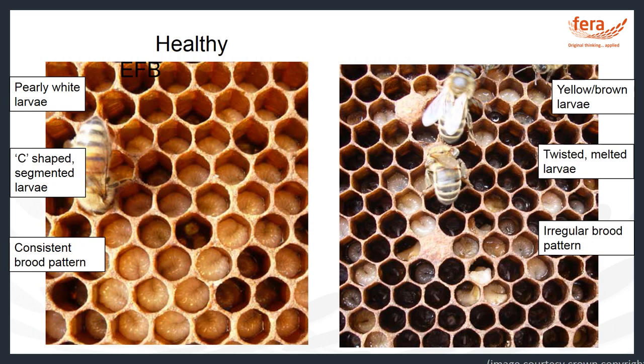If we compare diseased larvae to healthy larvae, the symptoms appear obvious. On the left hand side we have an example of healthy brood — the larvae are sitting neatly in their cells in a C shape, with a clear segmentation pattern, pearly white, and the overall brood pattern is consistent. However, when the comb is infected with EFB, like the example image on the right, the brood pattern is inconsistent. Some of the larvae are not in a C shape, they have lost their segmentation pattern and look as though they have melted, and some have begun to turn yellow and brown.